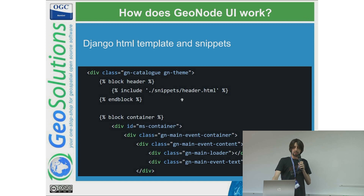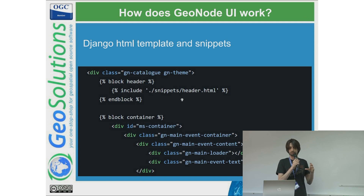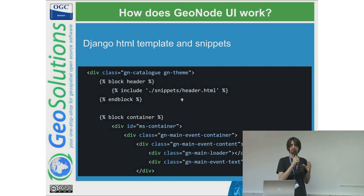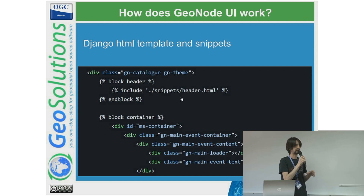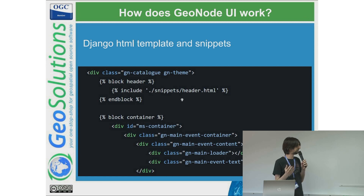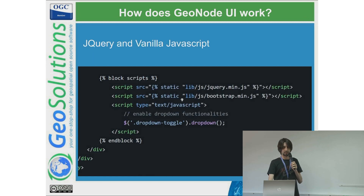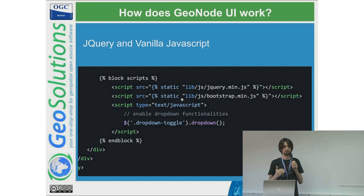Here is an example of the HTML snippet I was talking about — this is the catalog page. You can see there is HTML and then some block tags. These blocks could be overridden by a GeoNode project and replaced with the content you prefer; for example, other components could be completely removed or overridden. Here is an example of how we tried to remove as much vanilla JavaScript as possible and use the Bootstrap library for minimum interaction.